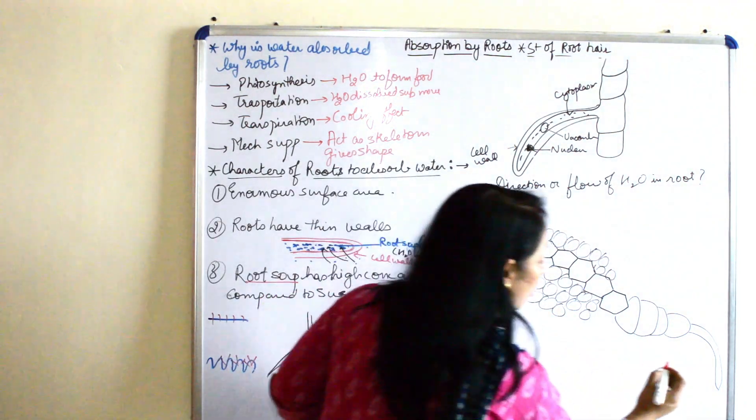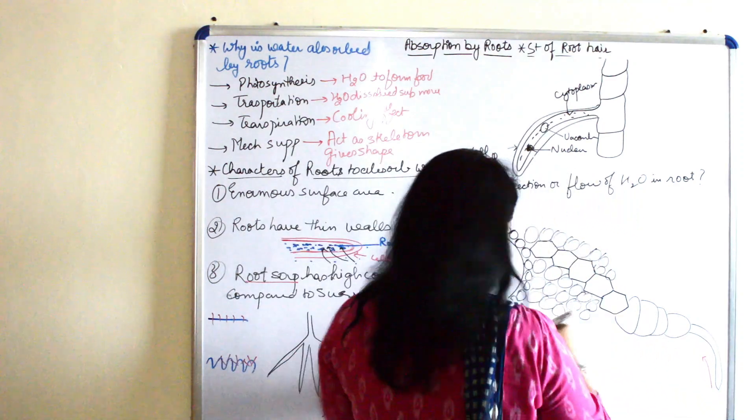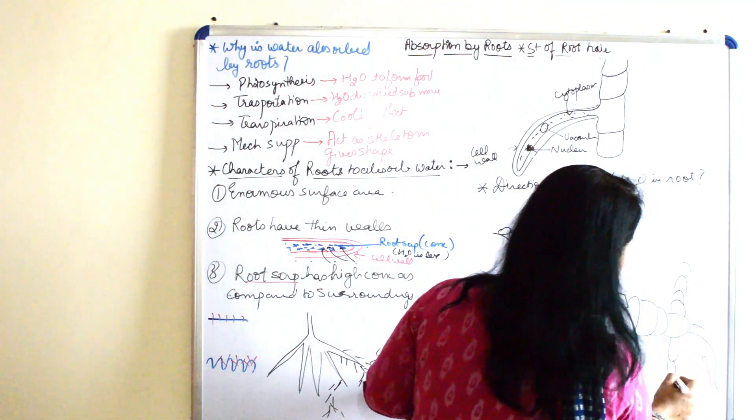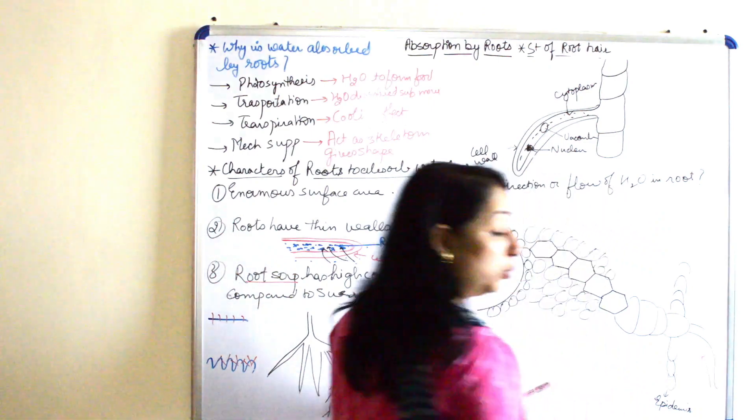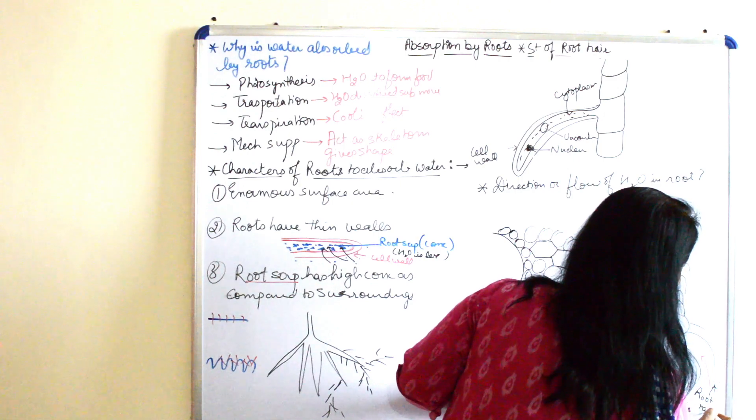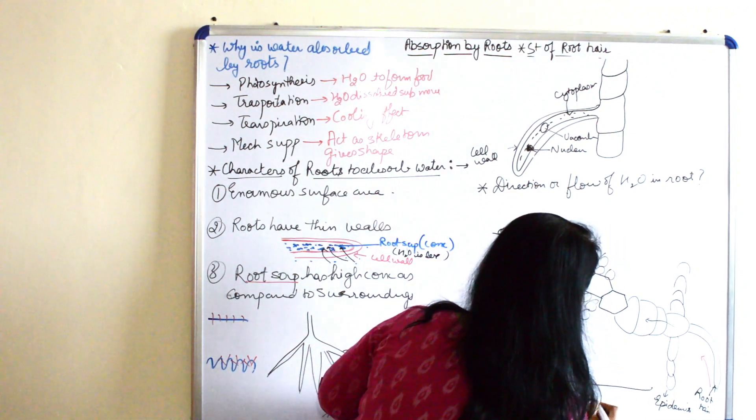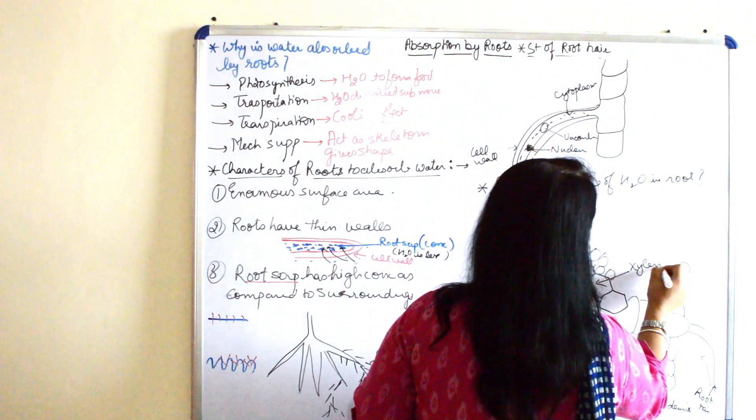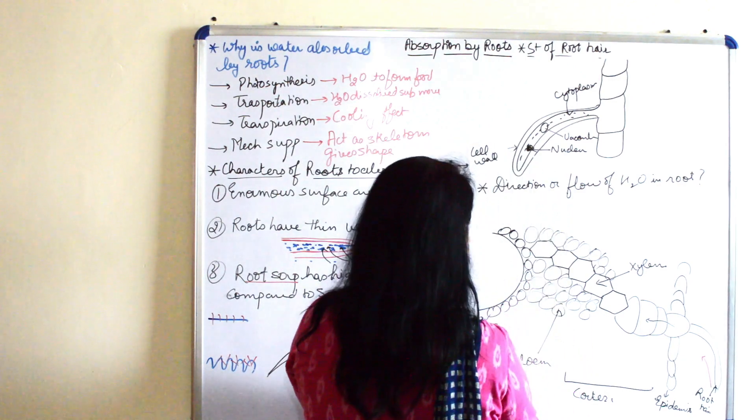I'll just make one xylem cell just for your understanding. And then come the cells and finally one of them extends to form the root here. So how or what is the flow? We are going to discuss. This water tends to move from here, starting from the root here, moving through the first layer. I'll just make these cells. The first is epidermis.